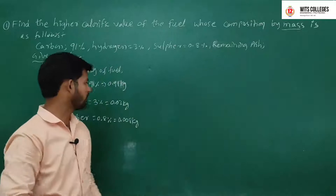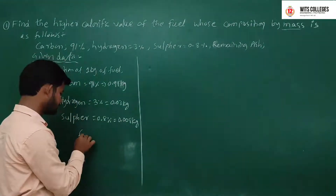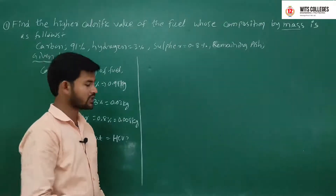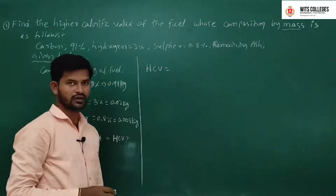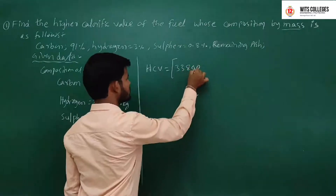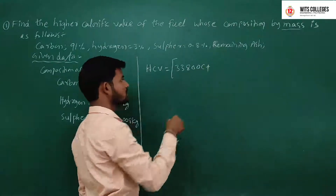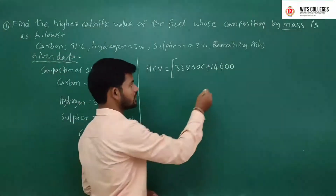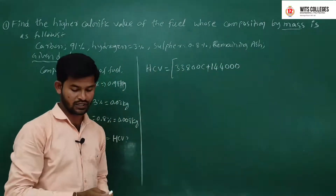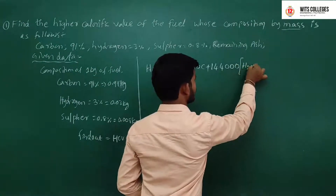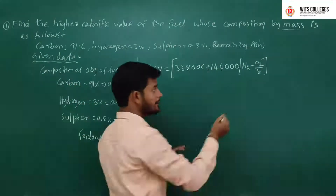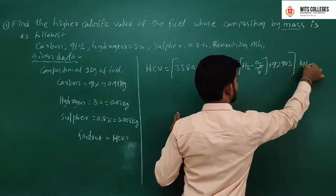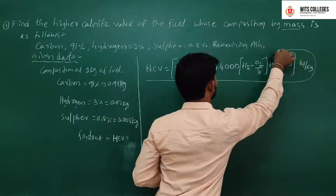Remainder is ash. We will find out the higher calorific value from the Dulong's formula. The HCV equation is: HCV = 33,800C + 144,000(H₂ − O₂/8) + 9,270S, in kilojoules per kg. This is the Dulong's formula for higher calorific value.